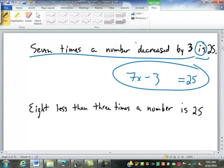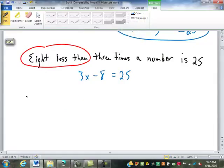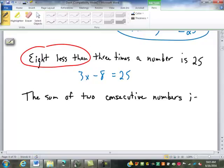So, what do you get? Perfect. 3x minus 8 equals 25. It's a little tricky because our brain wants to put something, if it comes first, we want to put it first. Here, 8 less than comes first, but that's not first in our sentence. We're subtracting, that's saying we're subtracting 8 from something, and you always have to subtract after the number is there.